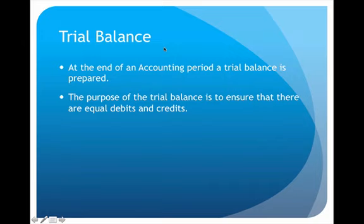The last thing to cover in this lecture is the trial balance. At the end of every accounting period, we always prepare a trial balance, and its purpose is to make sure that we have equal debits and credits. This ties in with the checks and balances discussed earlier — that's the whole point of double-entry accounting: to have everything recorded in two locations so we always have that automatic built-in system of checks and balances.